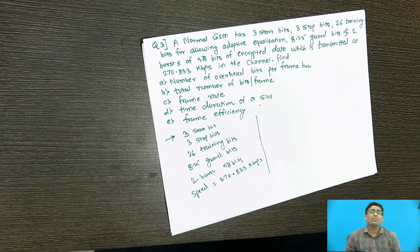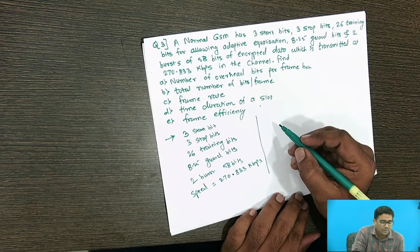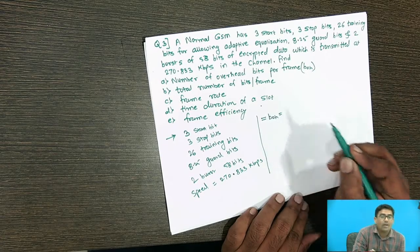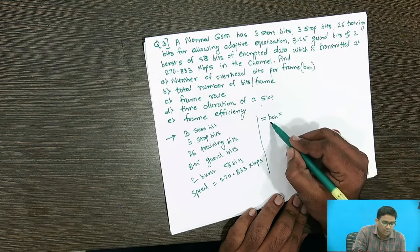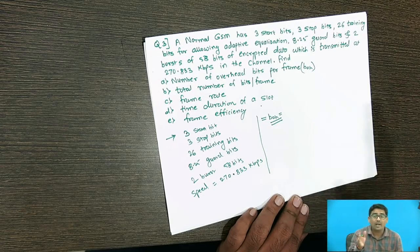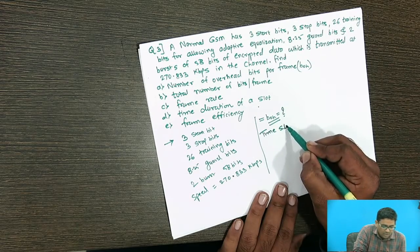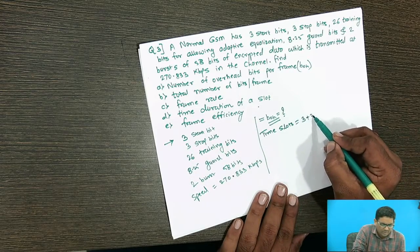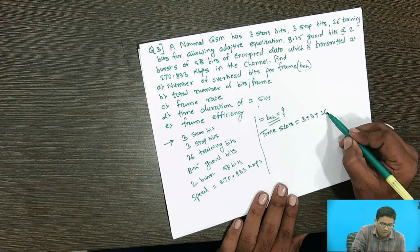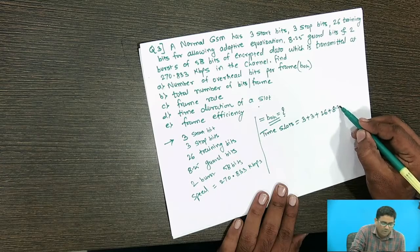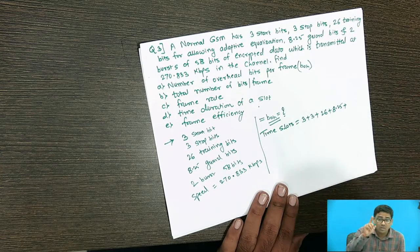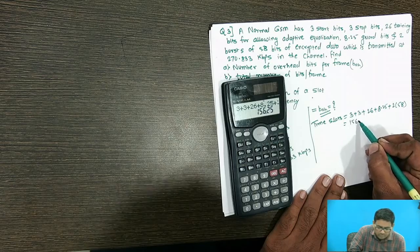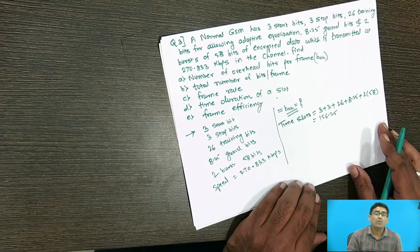Now these are the given things. First, I want to calculate the number of overhead bits per frame, that is BOH. Before calculating BOH, let me write down the time slot structure: 3 start bits plus 3 stop bits equals 6, plus 26 training bits, plus 8.25 guard bits, plus 2 bursts of 58 bits each.